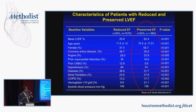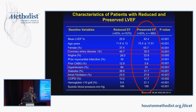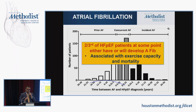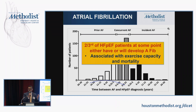In terms of cardiovascular comorbidities, the common ones in HFpEF are coronary artery disease, hypertension, and atrial fibrillation. Atrial fibrillation is so common that two-thirds of patients with HFpEF either have AFib or will develop AFib during their lifetime.